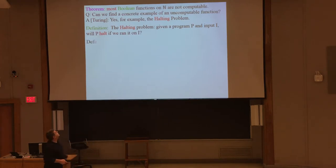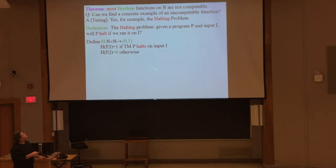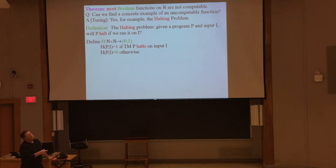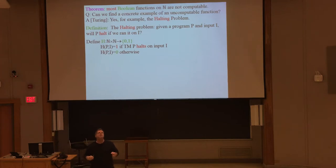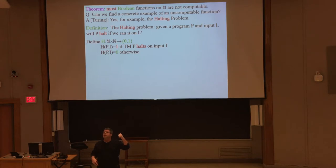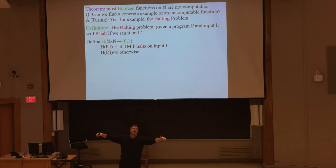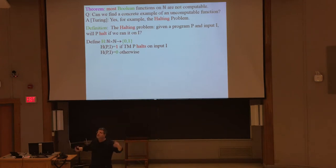We can formally define H as the halting function — a boolean function from naturals cross naturals to {0, 1}. We use naturals cross naturals because the program and the input can both be represented as natural numbers, by the canonical ordering we described earlier: take the string, break it into bits, and interpret it as a number in base two. So it's a two-variable function P and I, and the answer is 1 if the program P halts on input I, and 0 if it does not halt.